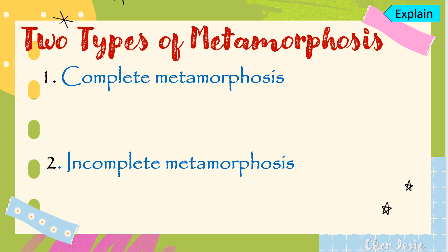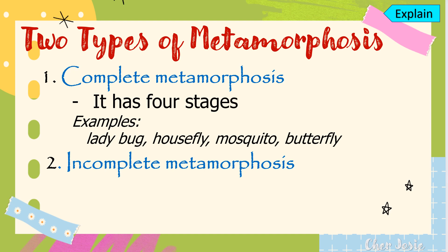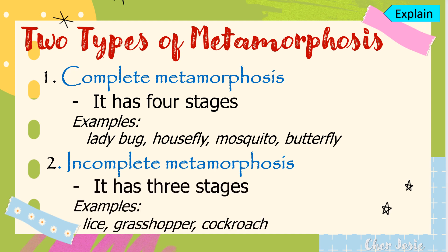Complete metamorphosis has four stages, which I will discuss shortly. Examples of insects that undergo complete metamorphosis are ladybug, housefly, mosquito, and butterfly. Incomplete metamorphosis has only three stages. Examples of animals that undergo incomplete metamorphosis are lice, grasshopper, and cockroach.